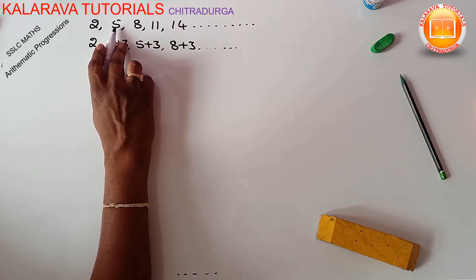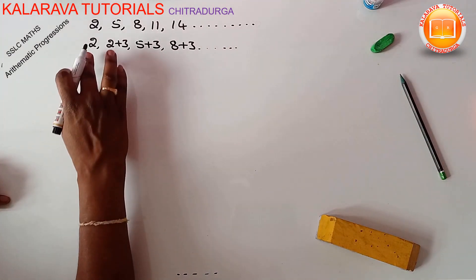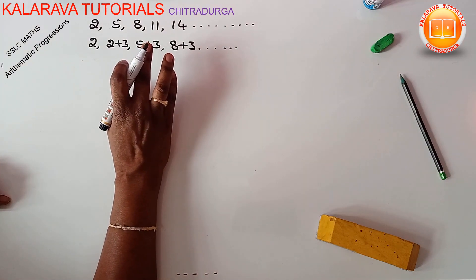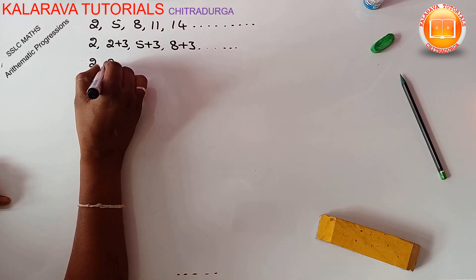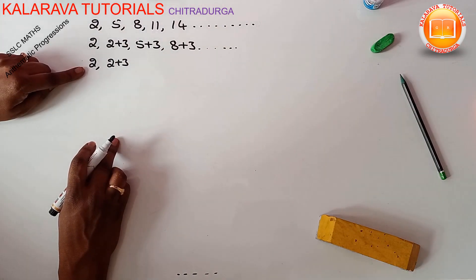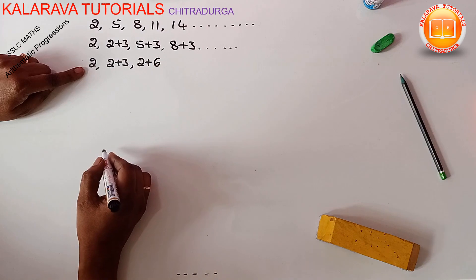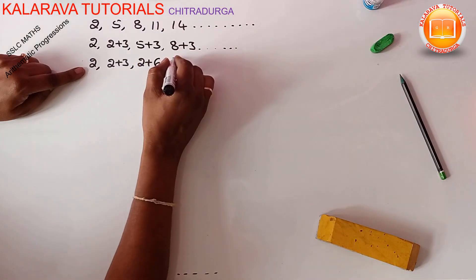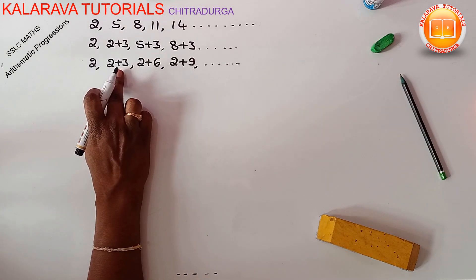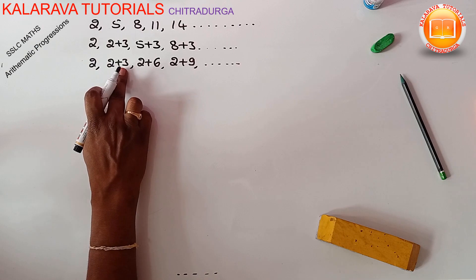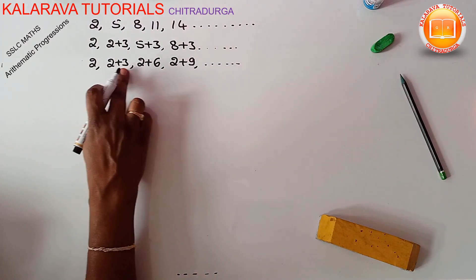For 2 we add 3, again for 5 we add 3, again for 8 we add 3 — in this way we get a series of numbers. This type of series is called an arithmetic progression. Observe that compared to the first term, to get the third term we add 2 times 3 (that is 6), to get the fourth term we add 2 plus 9, and so on — multiples of 3.